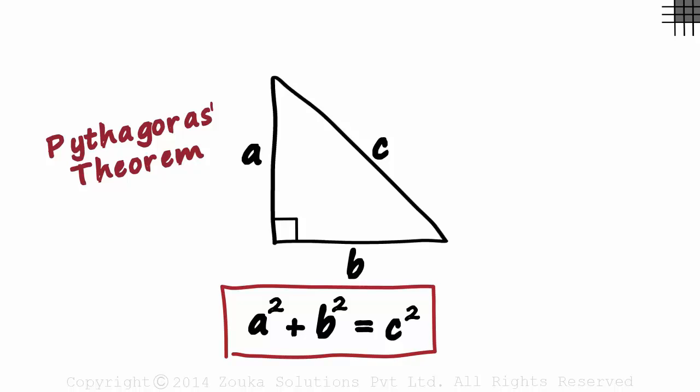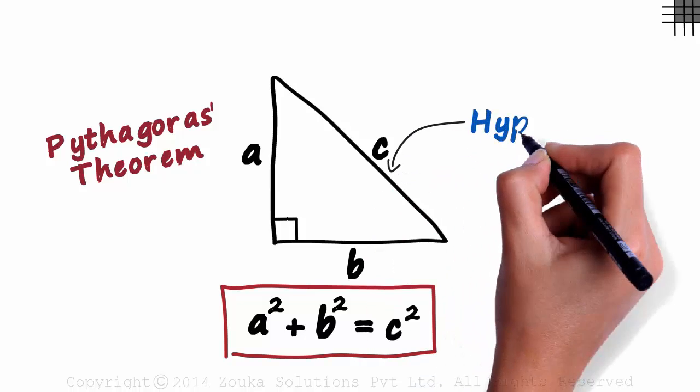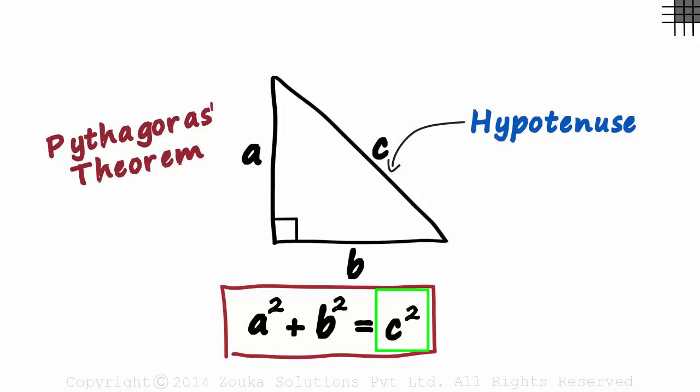The side opposite the right angle is called the hypotenuse. The square of the hypotenuse is always equal to the sum of the squares of the other two sides.